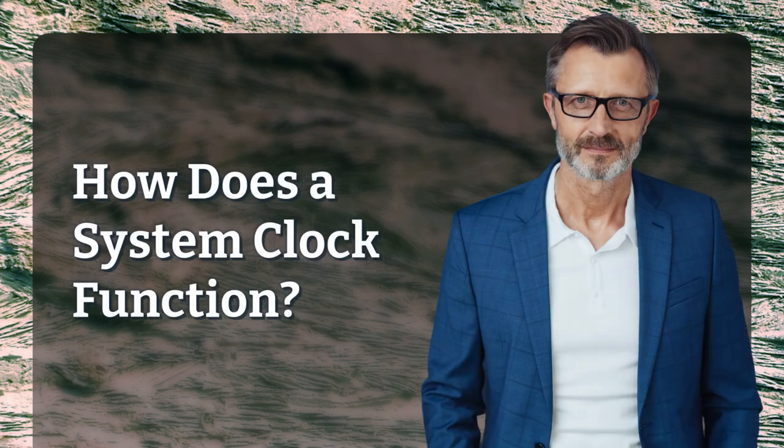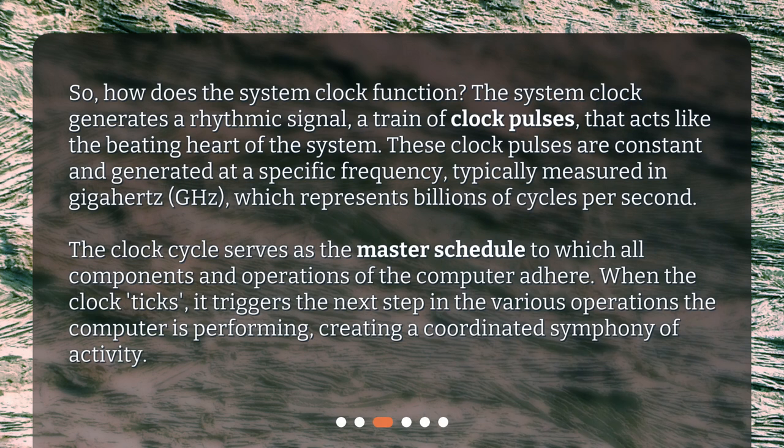How does the system clock function? The system clock generates a rhythmic signal, a train of clock pulses, that acts like the beating heart of the system. These clock pulses are constant and generated at a specific frequency, typically measured in gigahertz (GHz), which represents billions of cycles per second. The clock cycle serves as the master schedule to which all components and operations of the computer adhere. When the clock ticks, it triggers the next step in the various operations the computer is performing, creating a coordinated symphony of activity.